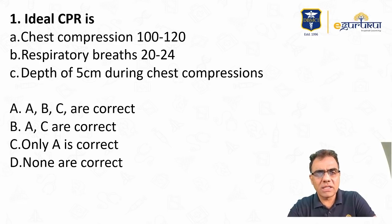Ideal CPR is: chest compression 100 to 120, respiratory breaths 20 to 24, depth of 5 cm during chest compressions. So chest compressions 100 to 120, that is right.